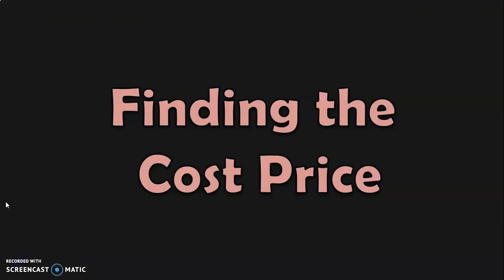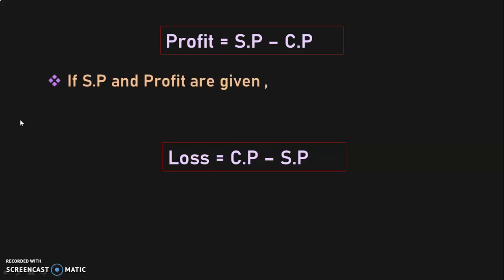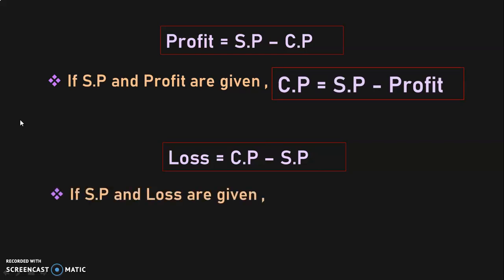Next, we are going to see how to find the cost price when the selling price and profit, or selling price and loss, is given. If selling price and profit are given, cost price equals selling price minus profit. If selling price and loss are given, cost price equals selling price plus loss. It is very important to remember the profit and loss formulas to derive these.